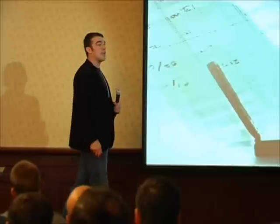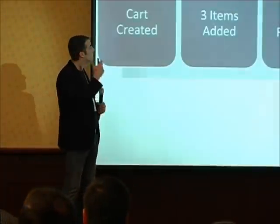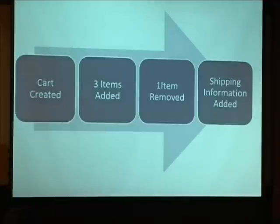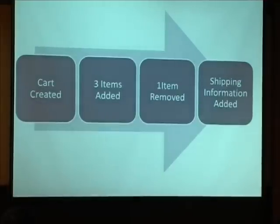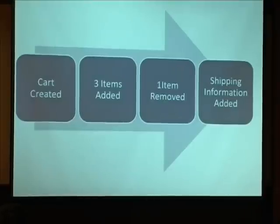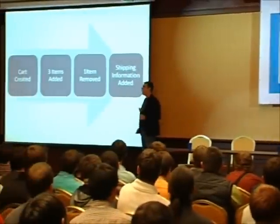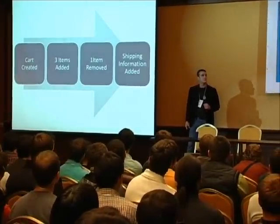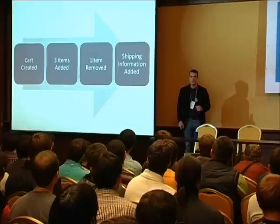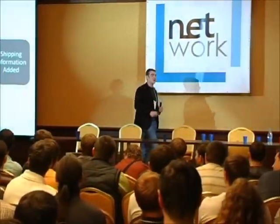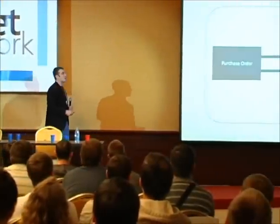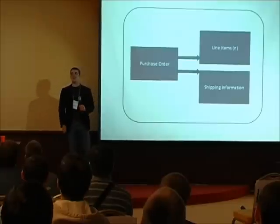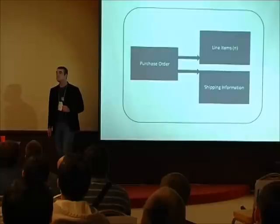We can do the exact same thing inside of our systems. I've got my cart being created, three items added, one item removed, and shipping information added. Is this the same as if I were only to add two items? The final result is the same if I want to look at them like this. But what if instead I wanted to track line items and how many times they were removed? Would it still be the same? Not at all.